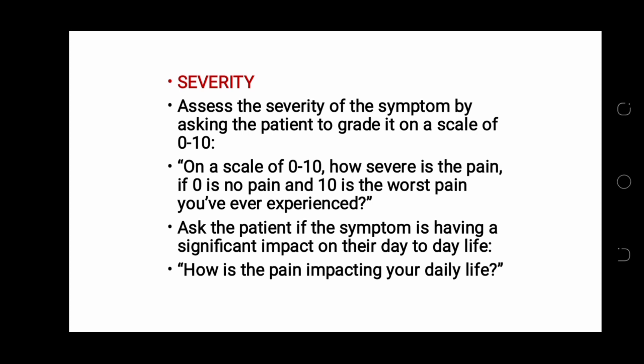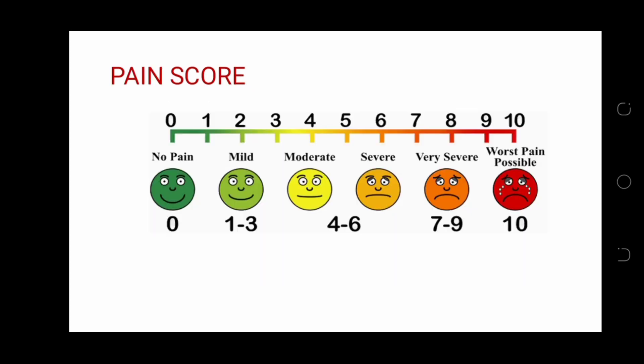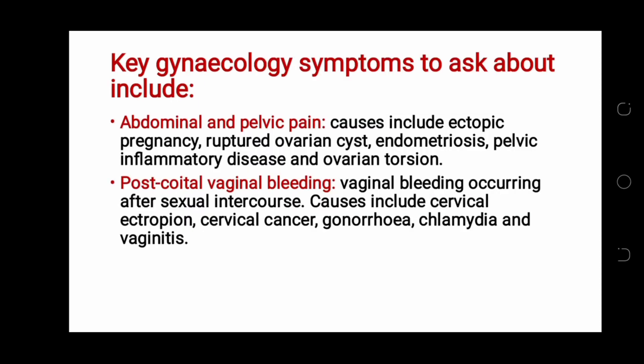Ask the patient if the symptom is having a significant impact on their day-to-day life: how is the pain impacting your daily life? A pain score using facial expression scoring from 0 to 10 can be used, where 0 is no pain and 10 is the worst pain possible. Key gynecological symptoms to ask about include abdominal and pelvic pain, with causes including ectopic pregnancy, ruptured ovarian cysts, endometriosis, pelvic inflammatory disease, and ovarian torsion.